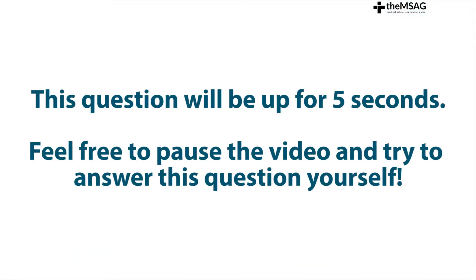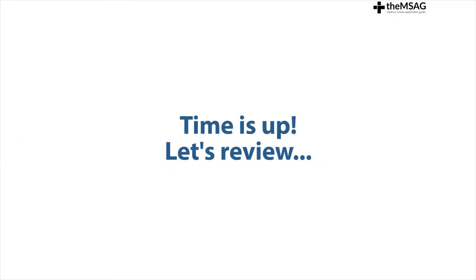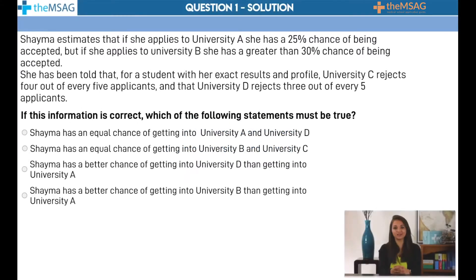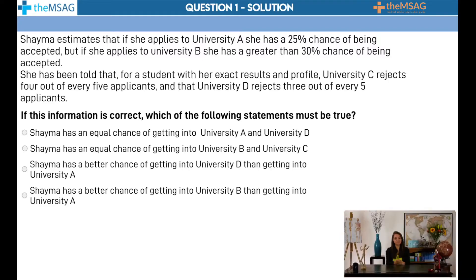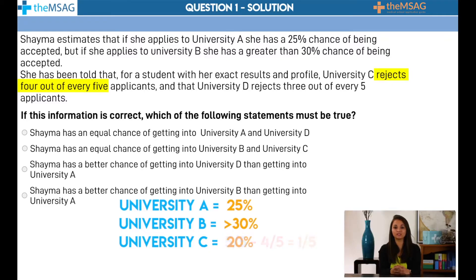Have a go at this first question and see for yourself how knowing the essential conversions can save you time. Let's convert each of the fractions into affirmative percentages — the percentage chance of being accepted into university. University A and B have acceptance rates already expressed as percentages: University A has a 25% acceptance rate, and University B has an acceptance rate above 30%. University C rejects 4 out of every 5 applicants, meaning it accepts 1 in 5, which equates to 20%, so C has a 20% acceptance rate.